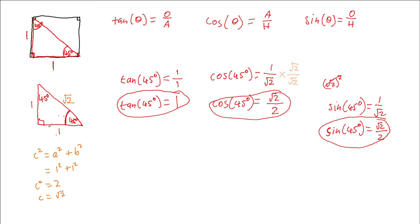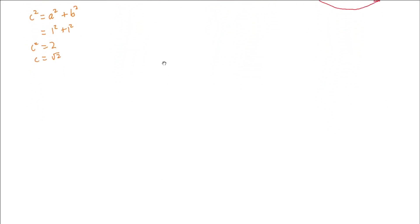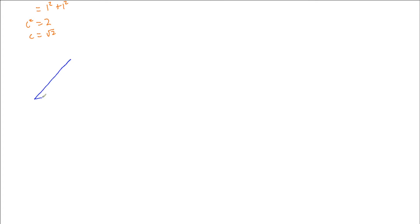I said we can use two triangles to help us, and this first triangle gets us 45 degrees. Now let's look at a different triangle. If I start off with an equilateral triangle and make every side length 2, I know in an equilateral triangle every angle is the same. Because the angles in a triangle add up to 180 degrees, they must all be 60 degrees.